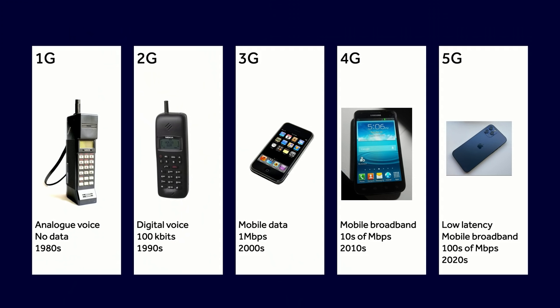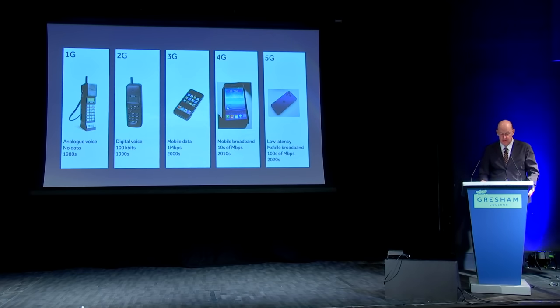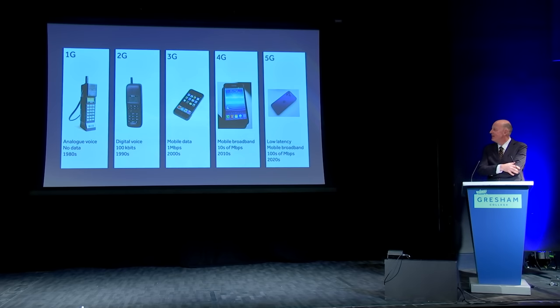1G had no data capability - strictly a voice device, like a fancy walkie-talkie that changed channels as you moved between cells. 2G was the first digital voice phone with a little data capability, and this is where SMS text messaging was invented. The way I heard it, SMS was an afterthought from Nokia - they had spare capacity and thought they'd try a text thing, not sure it would be popular. The rest is history. It got picked up firstly by the youth movement and now we all text each other.